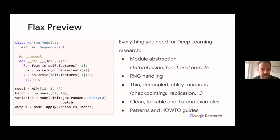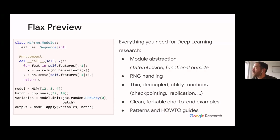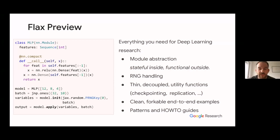Our RNG handling is also an important feature of Flax. JAX handles RNGs differently from NumPy — NumPy's RNG is based on a global state, which makes it hard to guarantee desirable properties for ML research. In JAX, you specifically provide the state to your random number generation. In Flax, the user explicitly provides RNGs when initializing or applying a module, but only at the top level — Flax automatically splits and propagates the key to all sub-modules.